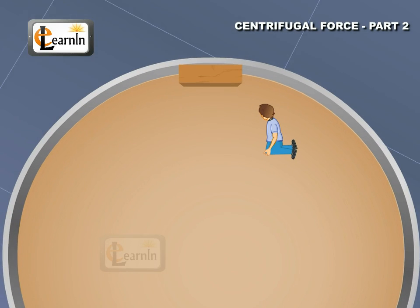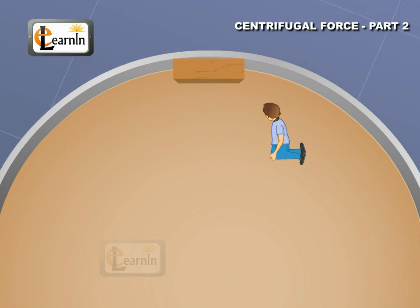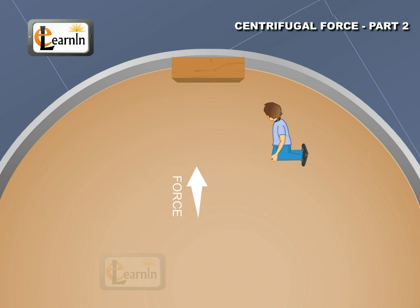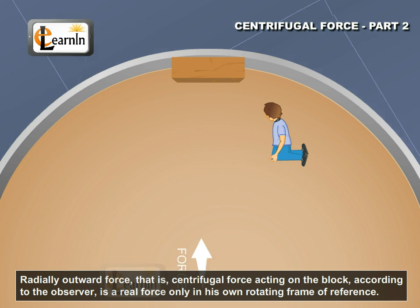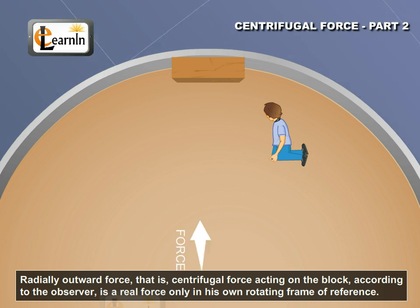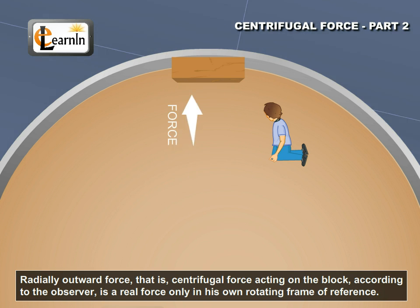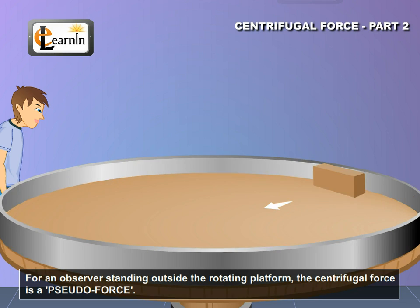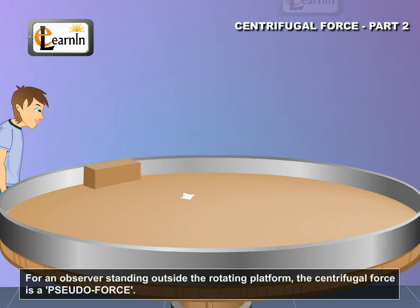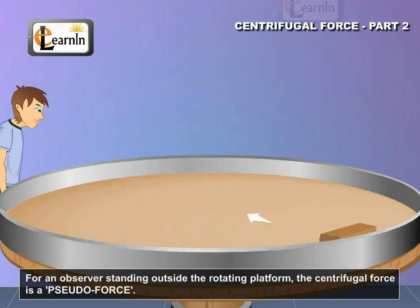With this background, let's come back to the observation of the wooden block on the rotating platform. The radially outward force acting on the block, according to the observer, is a real force only in his own rotating frame of reference. However, for an observer standing outside the rotating platform, this centrifugal force is a pseudo-force.